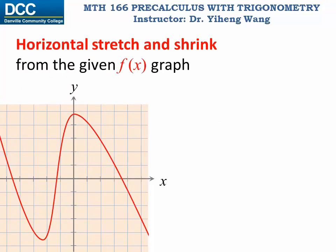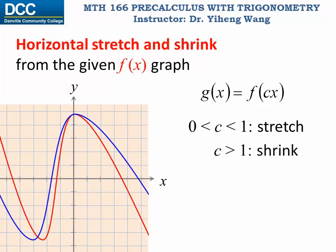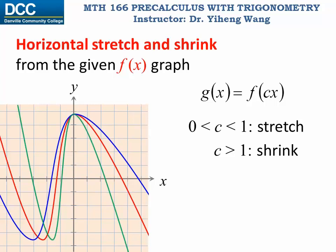Based on the given f function graph, if we sketch g(x) = f(c·x), that indicates horizontal changes. If c is between 0 and 1, that is a horizontal stretch; if c is greater than 1, that is a horizontal shrink. Notice all the graphs have the same y-intercept, because changes are only applied to the input with no vertical change. This type of transformation involving stretching or shrinking is called non-rigid transformations, because the ratio of the graphs has been changed.